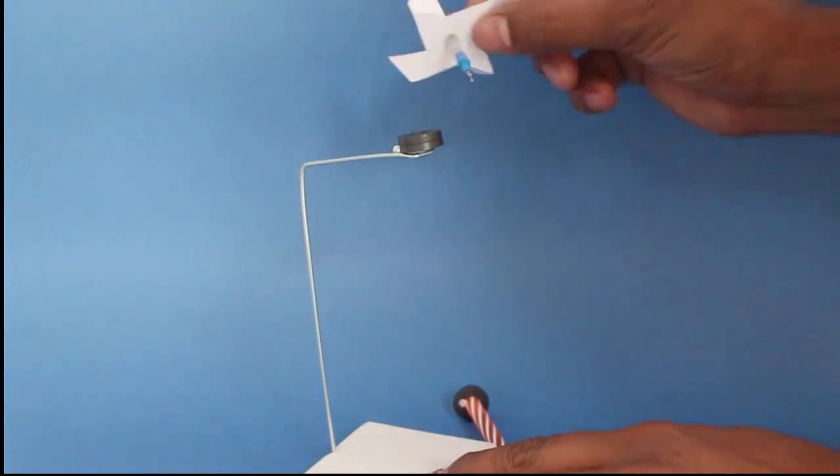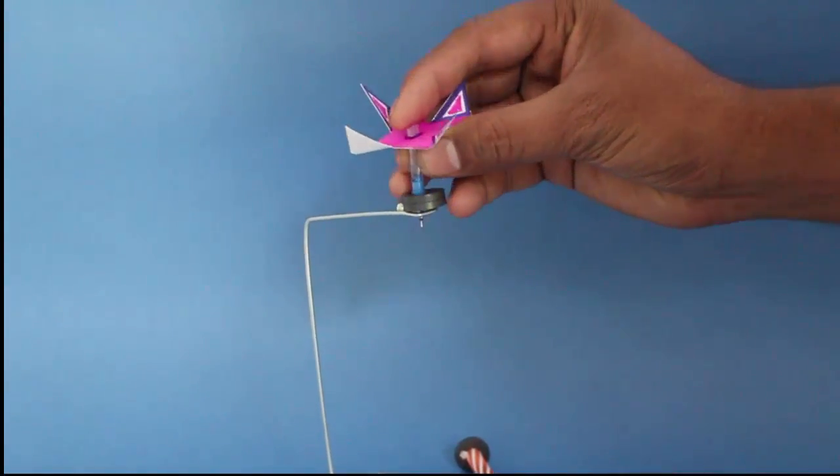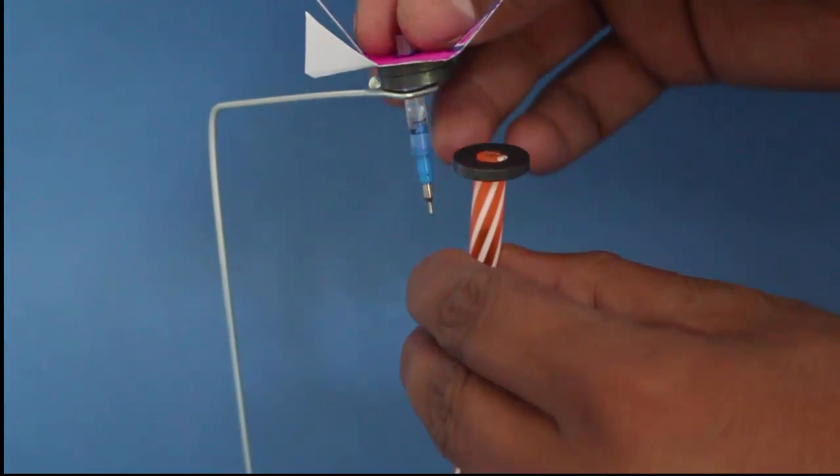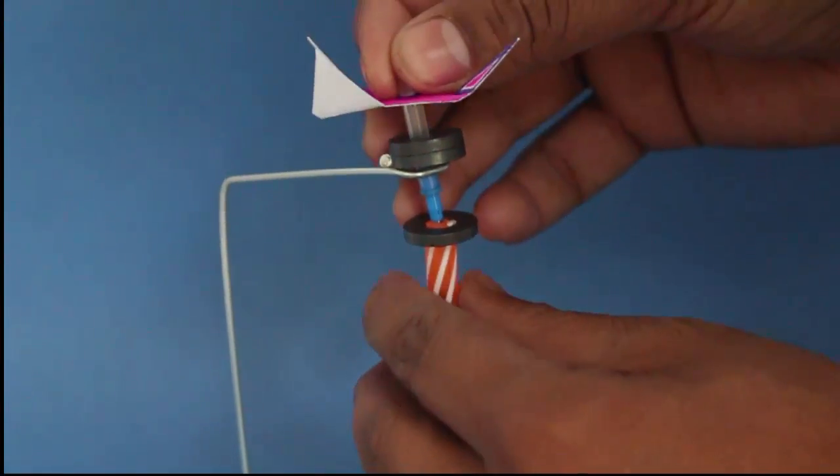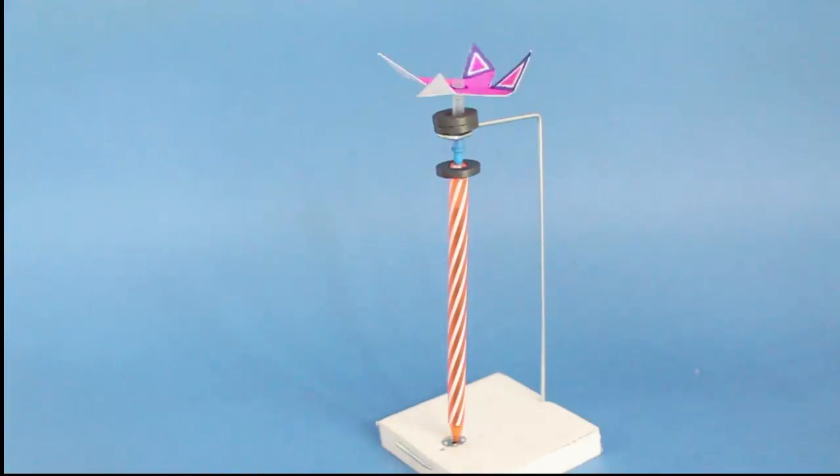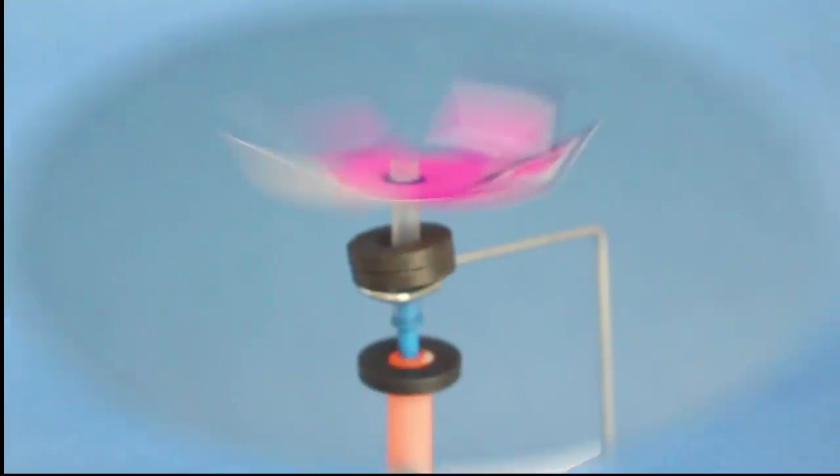Now fix a card fan plus refill assembly on the pen as shown. The refill will be inserted in the back of the pen. On placing the toy under a ceiling fan, the pen and the propeller will keep spinning perpetually.